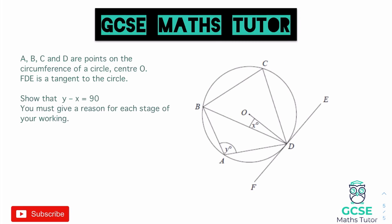On to the final question — again we've got algebra involved, similar to question one with lots of different methods available. A, B, C and D are points on the circumference of the circle, centre O. FDE is a tangent to the circle. We need to show that Y minus X equals 90, giving a reason for each stage. One nice approach is to draw in line BO, creating an isosceles triangle using those two radii.